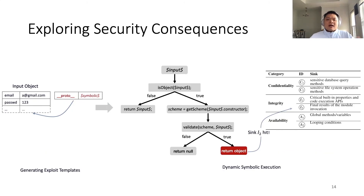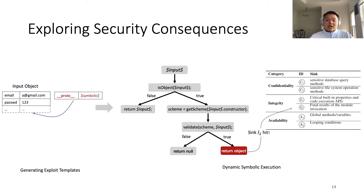In the second step, LYNX further analyzes the recorded properties and finds potentially exploitable input. To do so, LYNX first generates and explores templates that can reach the potentially vulnerable property. We then run the testing program with our constructed templates, symbolically executing the hidden property. The symbolic execution engine will try to explore all possible paths. We define six different sinks for hidden property abusing. When a certain sink is hit, LYNX will fetch the corresponding payload and add it to the final output.